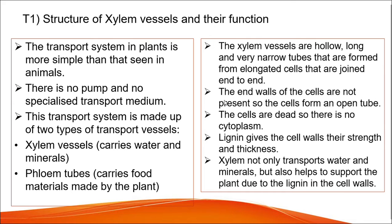Xylem vessels are hollow, long, and very narrow tubes formed from elongated cells joined end to end. The end walls of the cells are not present, so the cells form an open tube. The cells are dead, so there is no cytoplasm, and lignin gives the cell walls their strength and thickness.